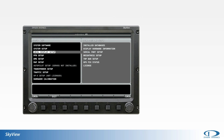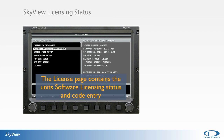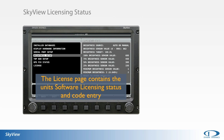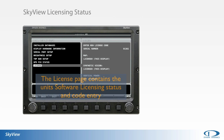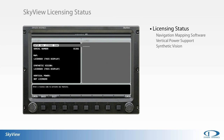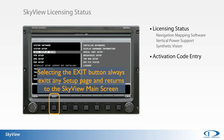At the bottom of the Local Display Setup menu is the license page. Information pertaining to the map, synthetic vision, and Vertical Power software licensing of your system is available here. All software activation codes are entered here under Enter New License Code. Selecting exit — button 2 — returns the user to the main Skyview display from any menu.